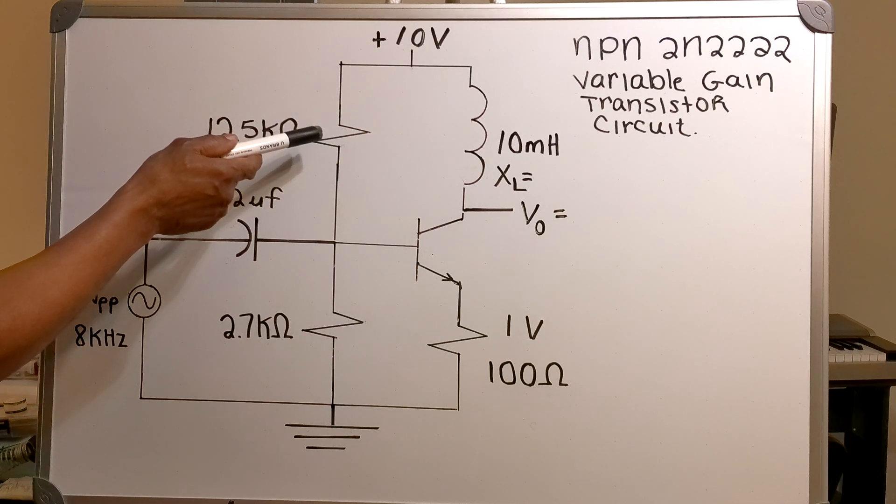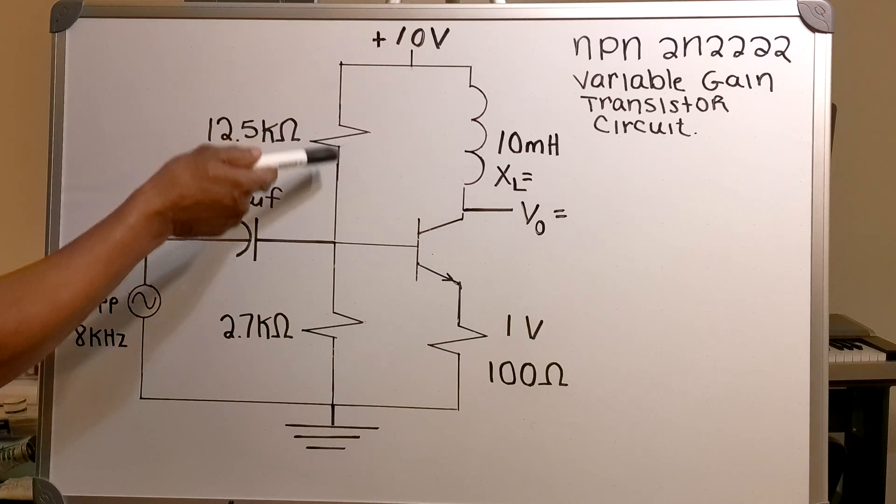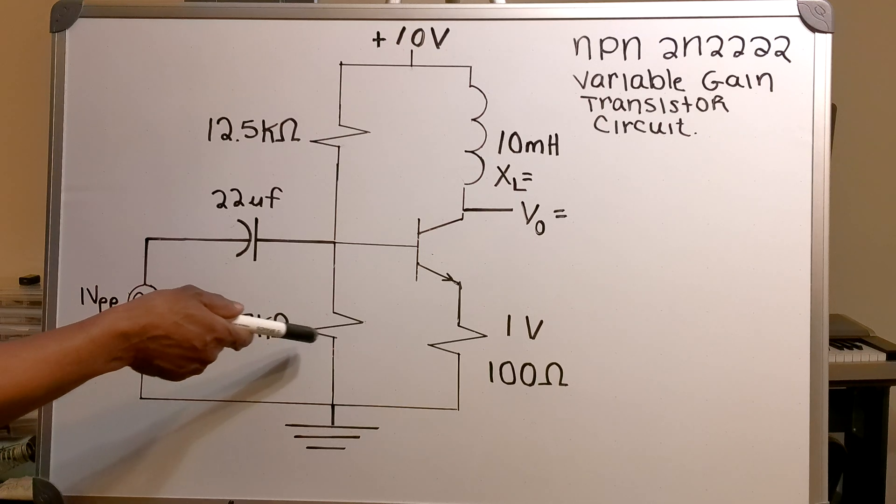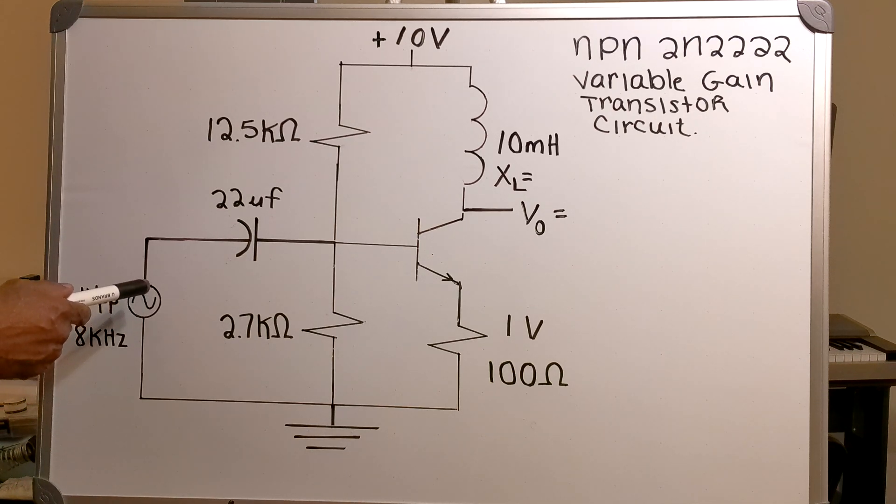On the base of the transistor I've got a 12.5k ohm resistor coming off the base and a 2.7k ohm resistor also coming off the base to ground. I've got a 1 volt peak-to-peak sinusoidal input in series with a 22 microfarad capacitor. The input signal has a frequency of 8 kilohertz.